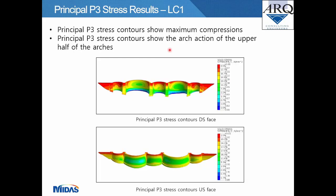The principal P3 stress results for Load Case 1 — these contours normally show maximum compressions. The P3 stress contours show the arch action of the upper half of the arches for the Olyphants Put dam, clearly indicated in two stress contour plots on the downstream and upstream faces.